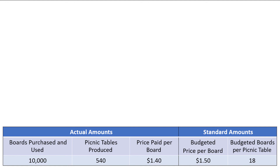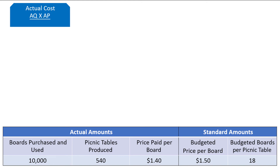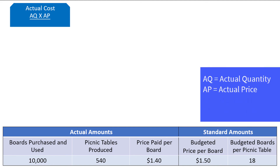I'm going to start by calculating a few different numbers. First is the actual cost of materials, or boards, that were purchased, which can be found by taking the actual quantity of materials purchased times the actual price paid. We abbreviate AQ for actual quantity and AP for actual price. We have 10,000 boards, which is our actual quantity, times the $1.40 actual price paid per board, which equals $14,000. Some problems will give you the actual cost, meaning you won't even need to do this calculation, so watch out for that.